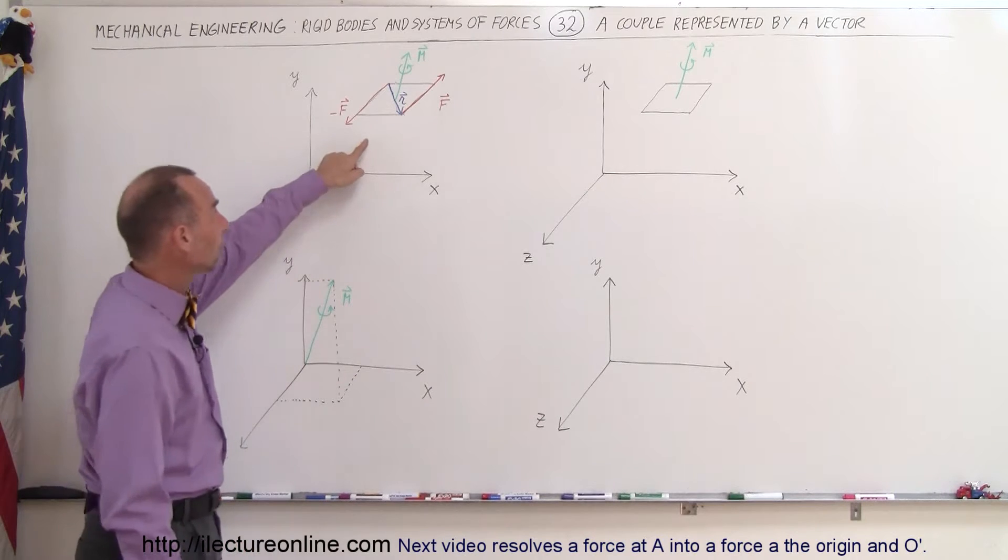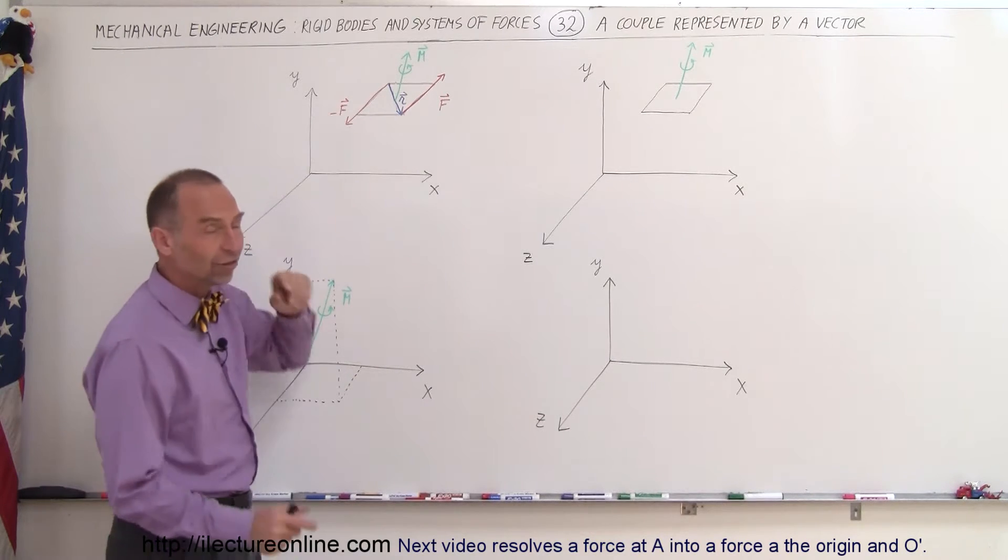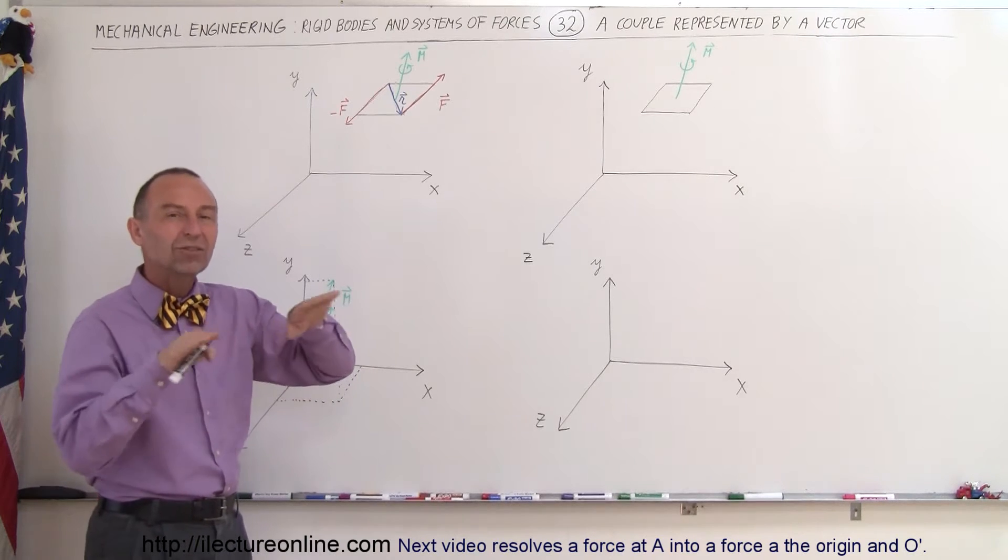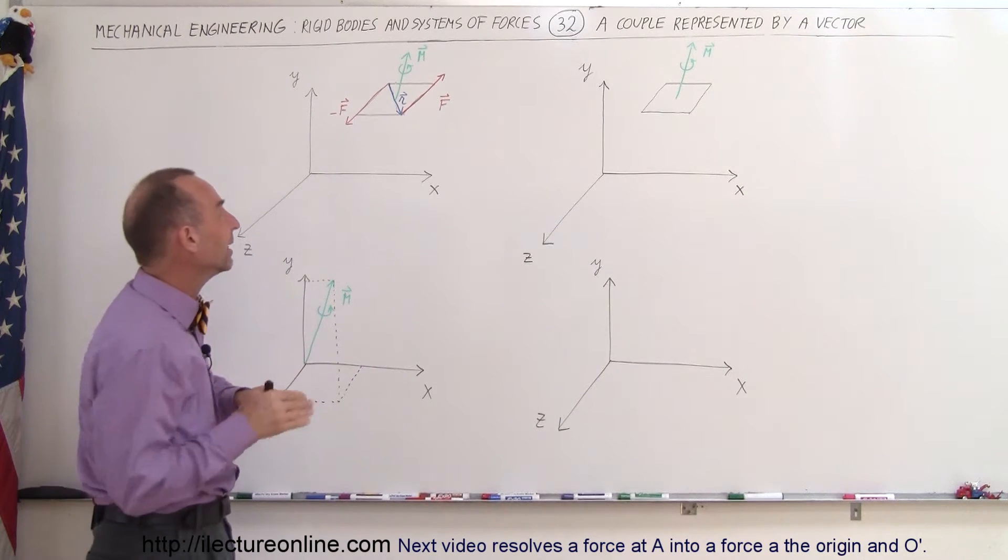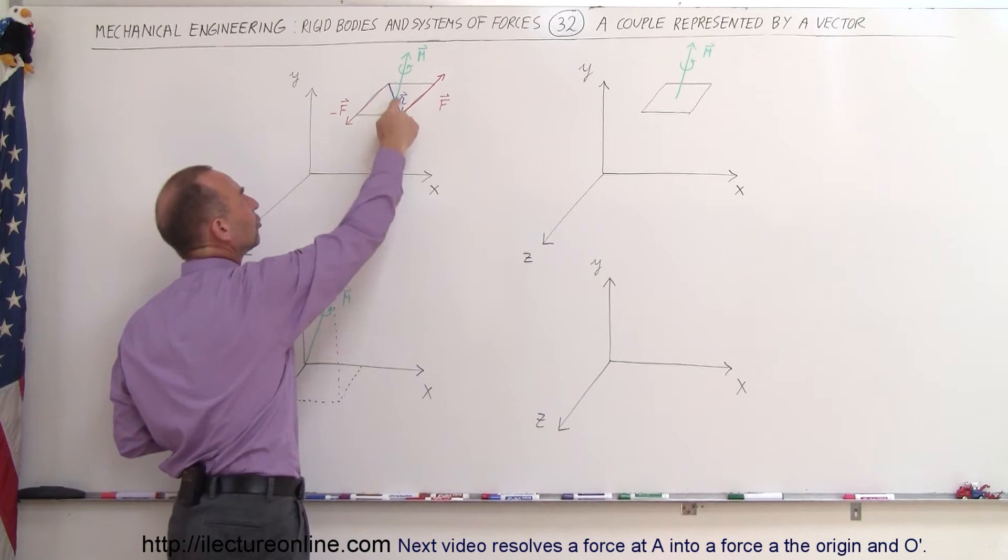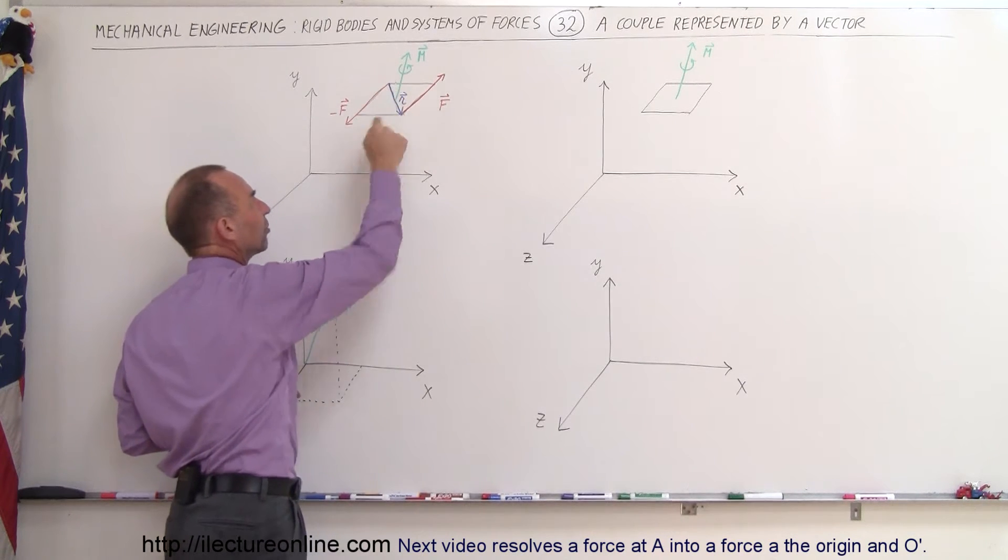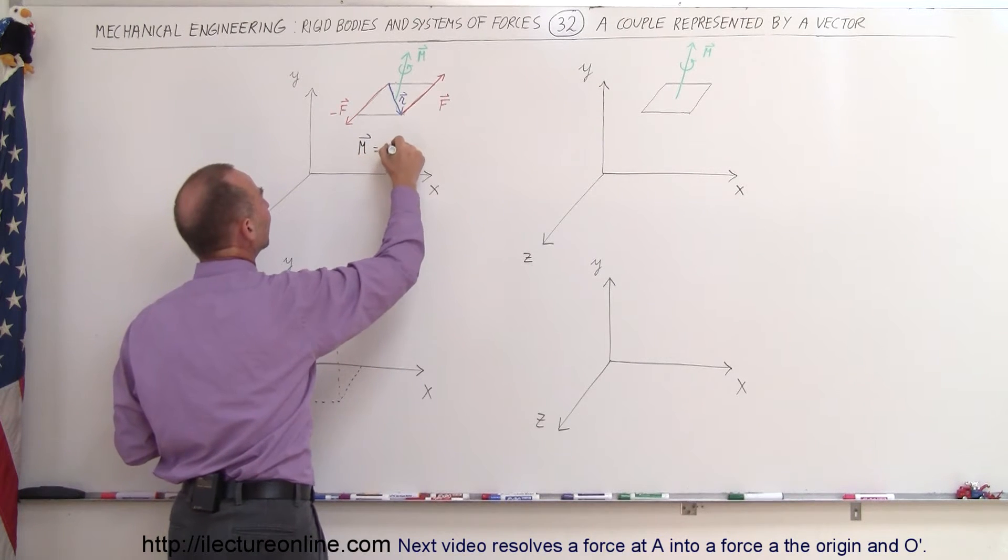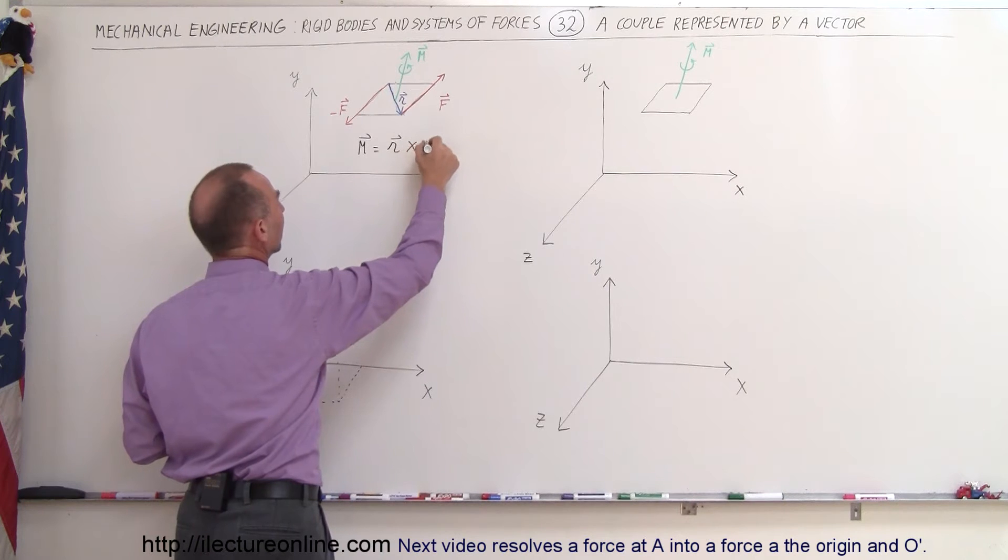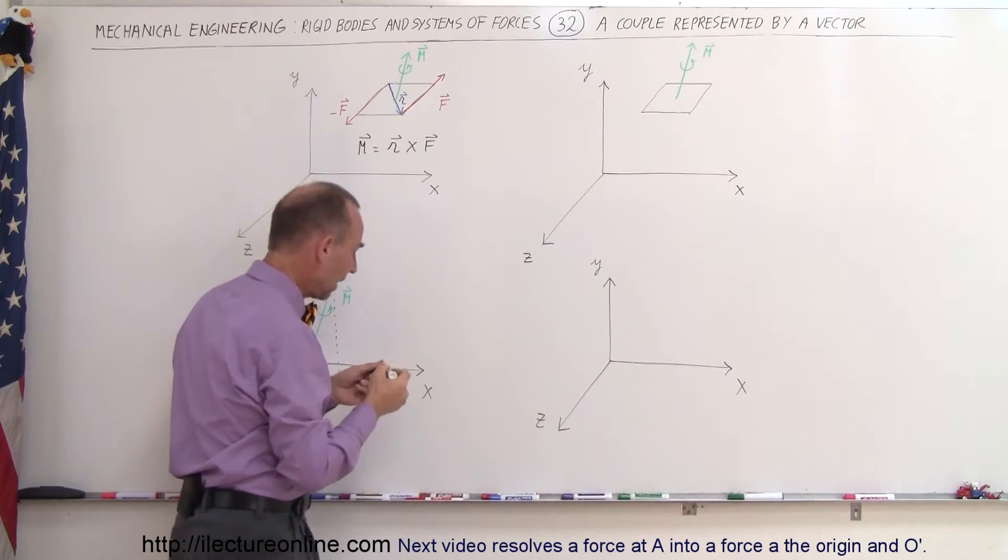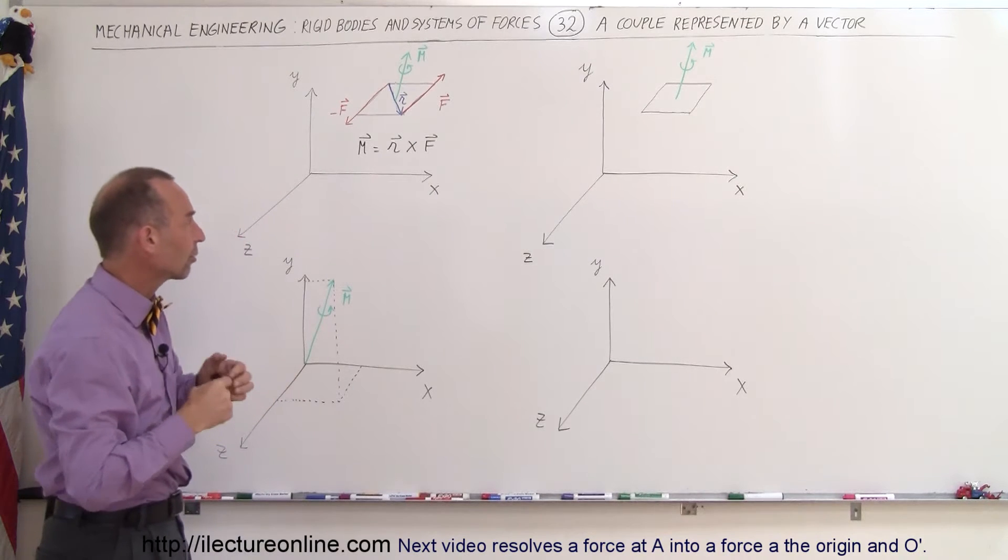So first of all, we start off again with a pair of forces. They're equal in magnitude, opposite direction. The two forces will form a plane somewhere in space. The plane can be directed in any which way. And then if you draw the vector between the two, start from the starting point of one vector to the starting point of the other vector, you can then say that the moment can be defined as the cross product or the vector product between the position vector between the two forces and one of the forces like that, R cross F.